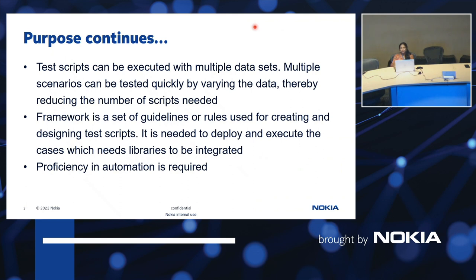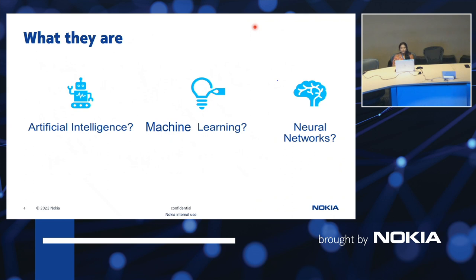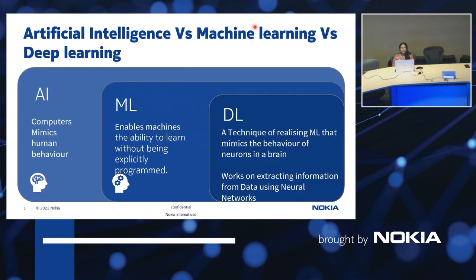In order to solve this purpose, we are going to use artificial intelligence, machine learning, and neural networks. Artificial intelligence is a defined program that exhibits cognitive ability similar to that of a human being — a computer can mimic several human behaviors. Machine learning enables the machine to learn by itself without explicit programming, using data sets the machine learns accordingly. Deep learning is a technique that is part of ML and behaves like neurons in a brain.